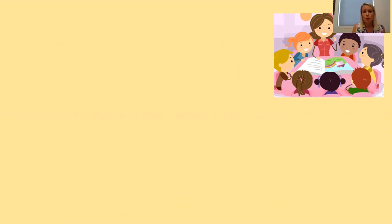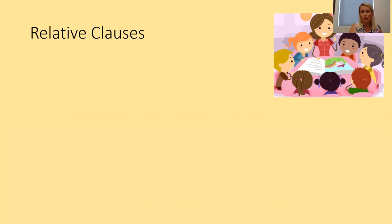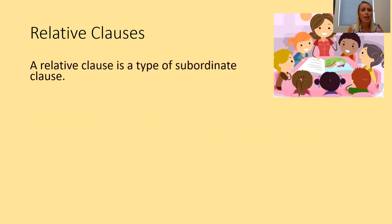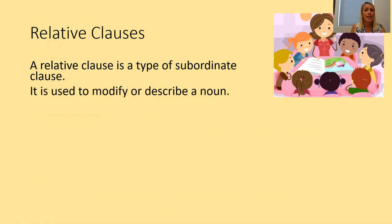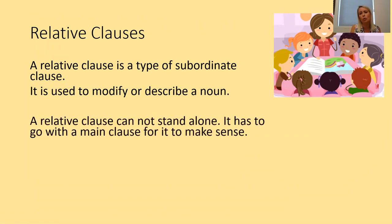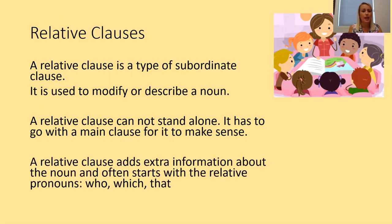We're going to work on the skill of relative clauses today, because when we write our introductions for our non-chronological reports tomorrow, we need to make sure relative clauses — one of our Year Six skills — are included. A relative clause is a type of subordinate clause. It's used to modify, change, or describe a noun. A relative clause can't stand alone — it has to go with the main clause. A relative clause adds extra information about the noun and often starts with the relative pronouns who, which, and that.